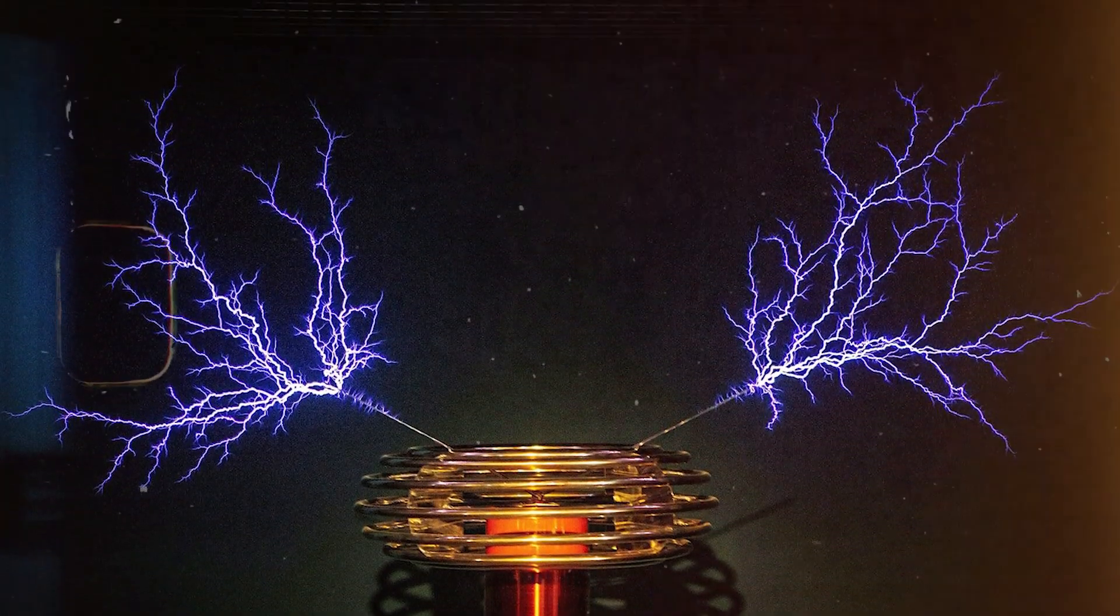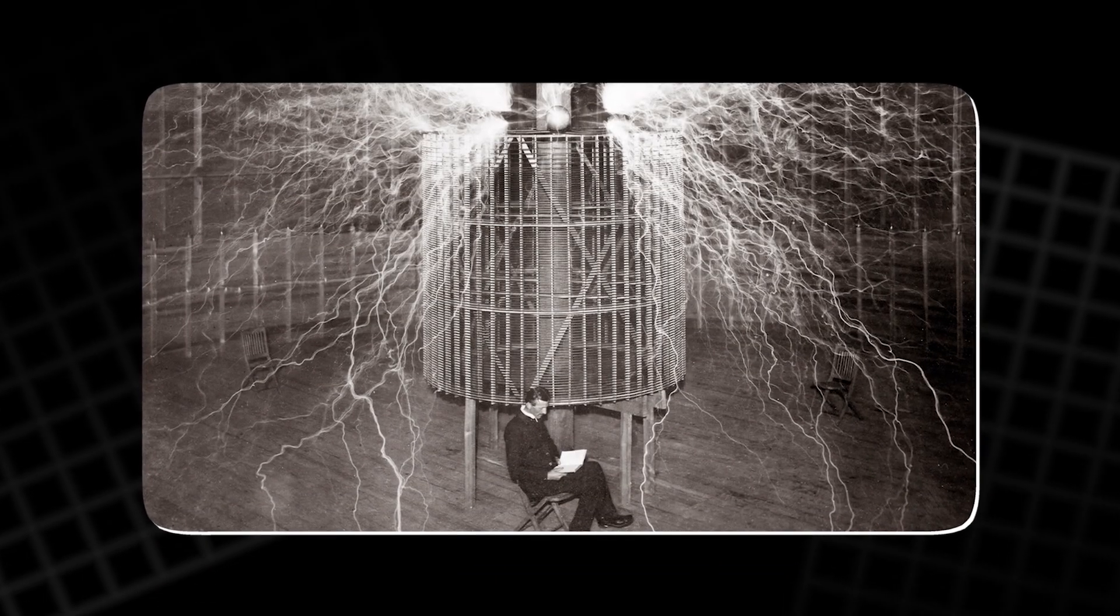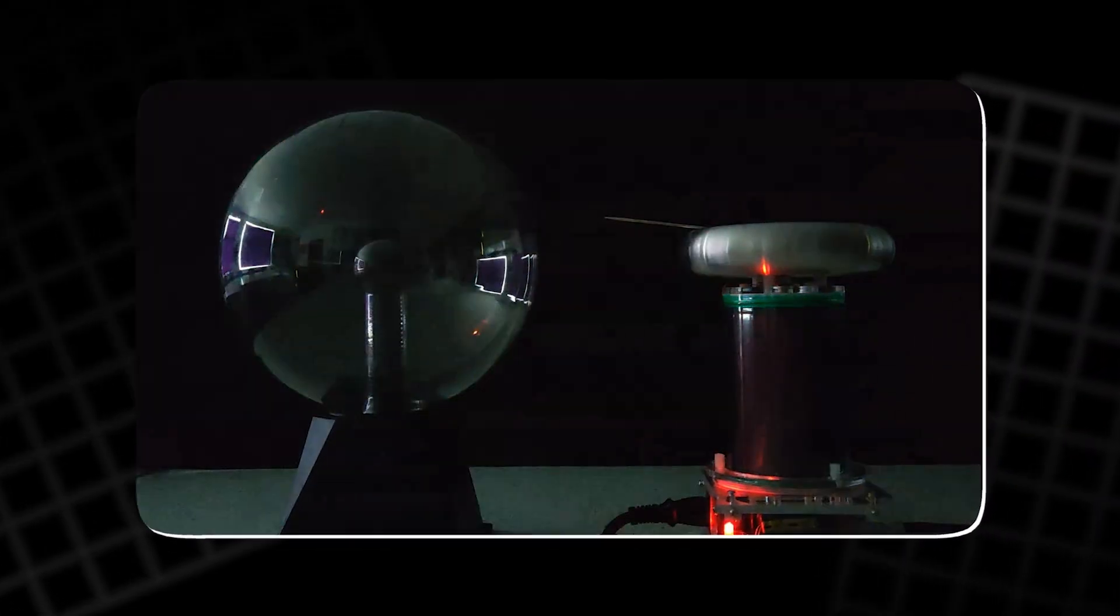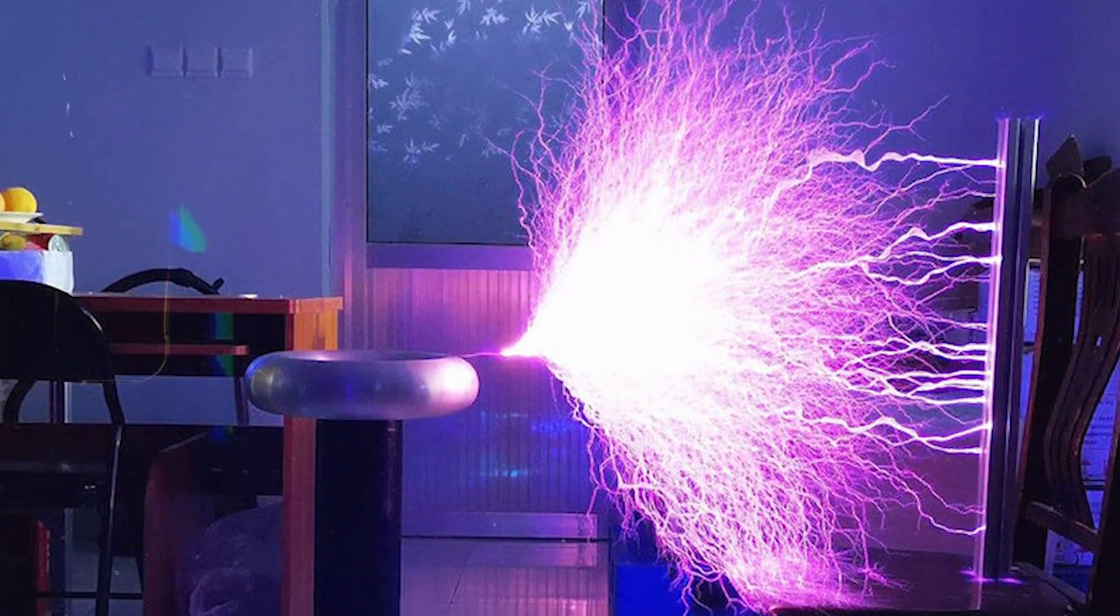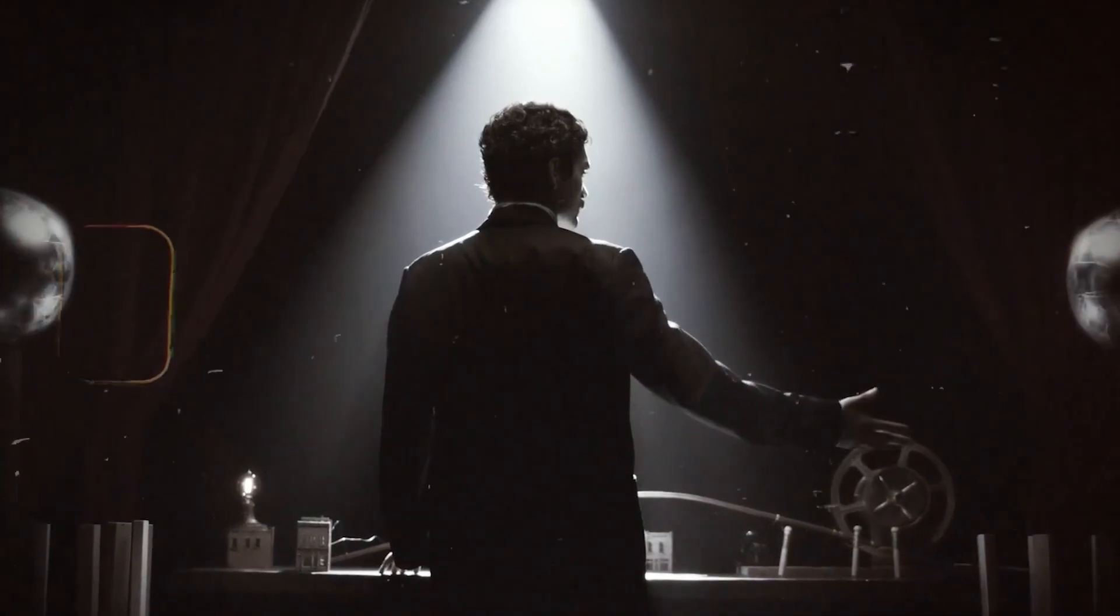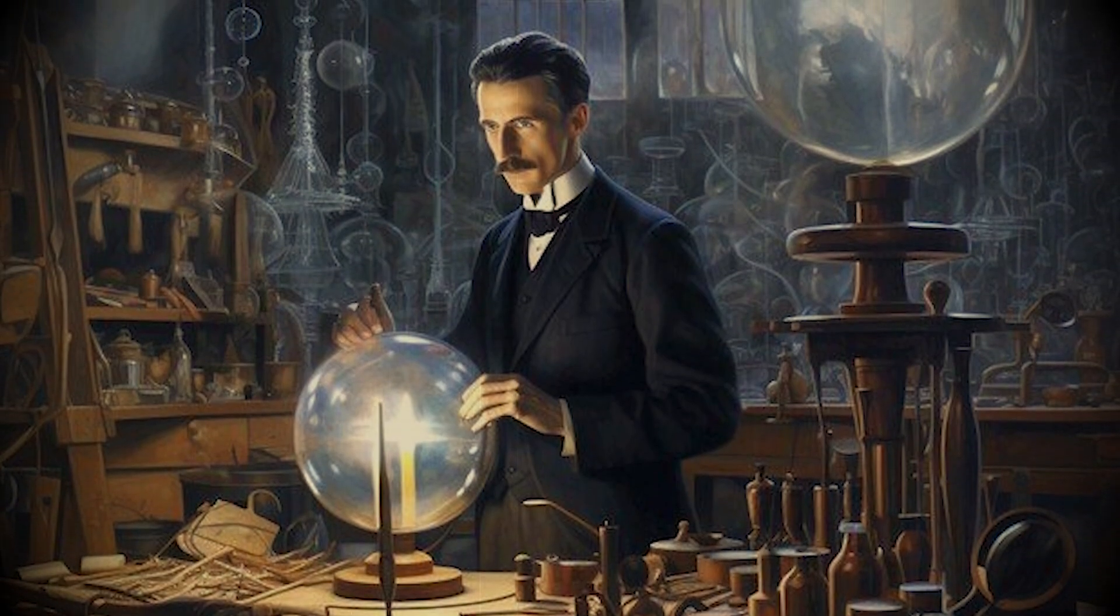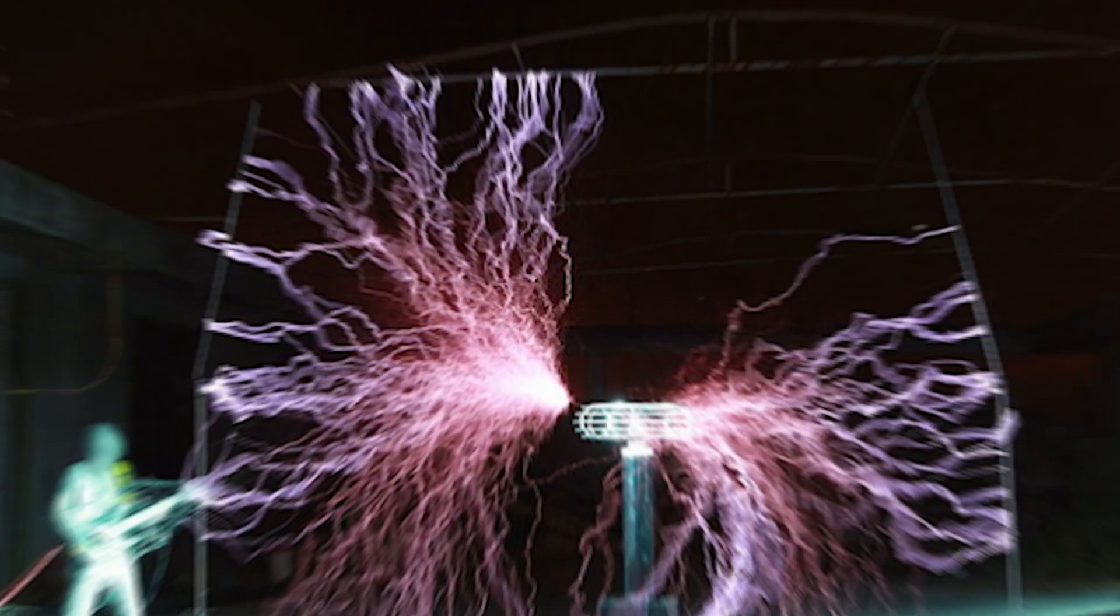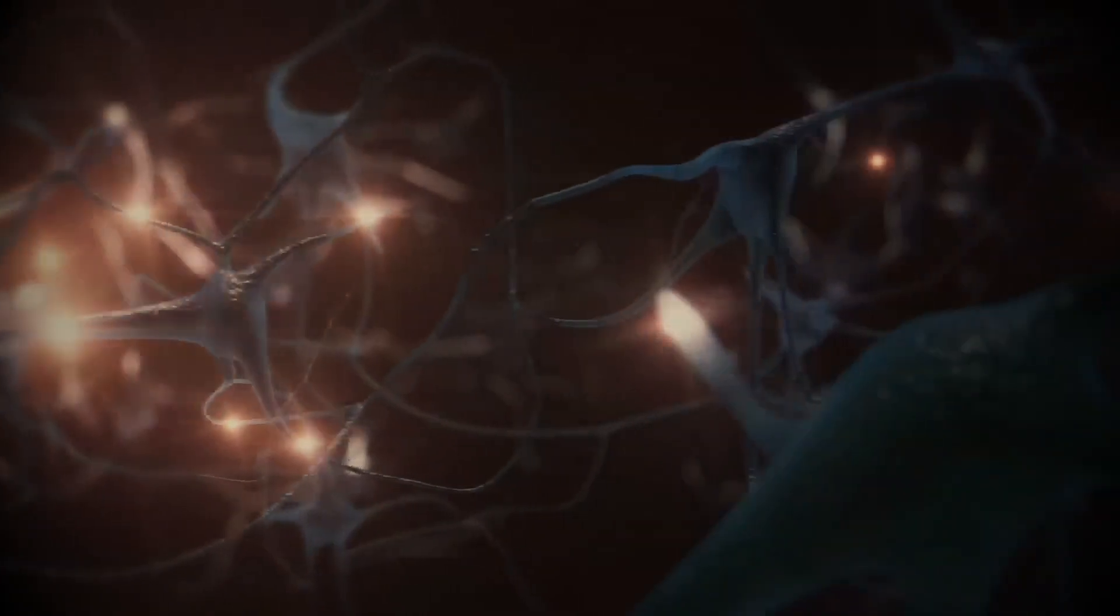The Tesla coil's role in demonstrating the phenomenon has become a classic in scientific education. It provides a safe way to visualize how electromagnetic energy can excite atoms without direct contact. The device is also a bridge between the world of physics and the imagination. Its inventor, Nikola Tesla, envisioned a future where energy could be transmitted wirelessly, and this small-scale demonstration captures a piece of that dream. Though primarily a teaching tool today, the coil still represents human curiosity about how invisible forces shape the material world.